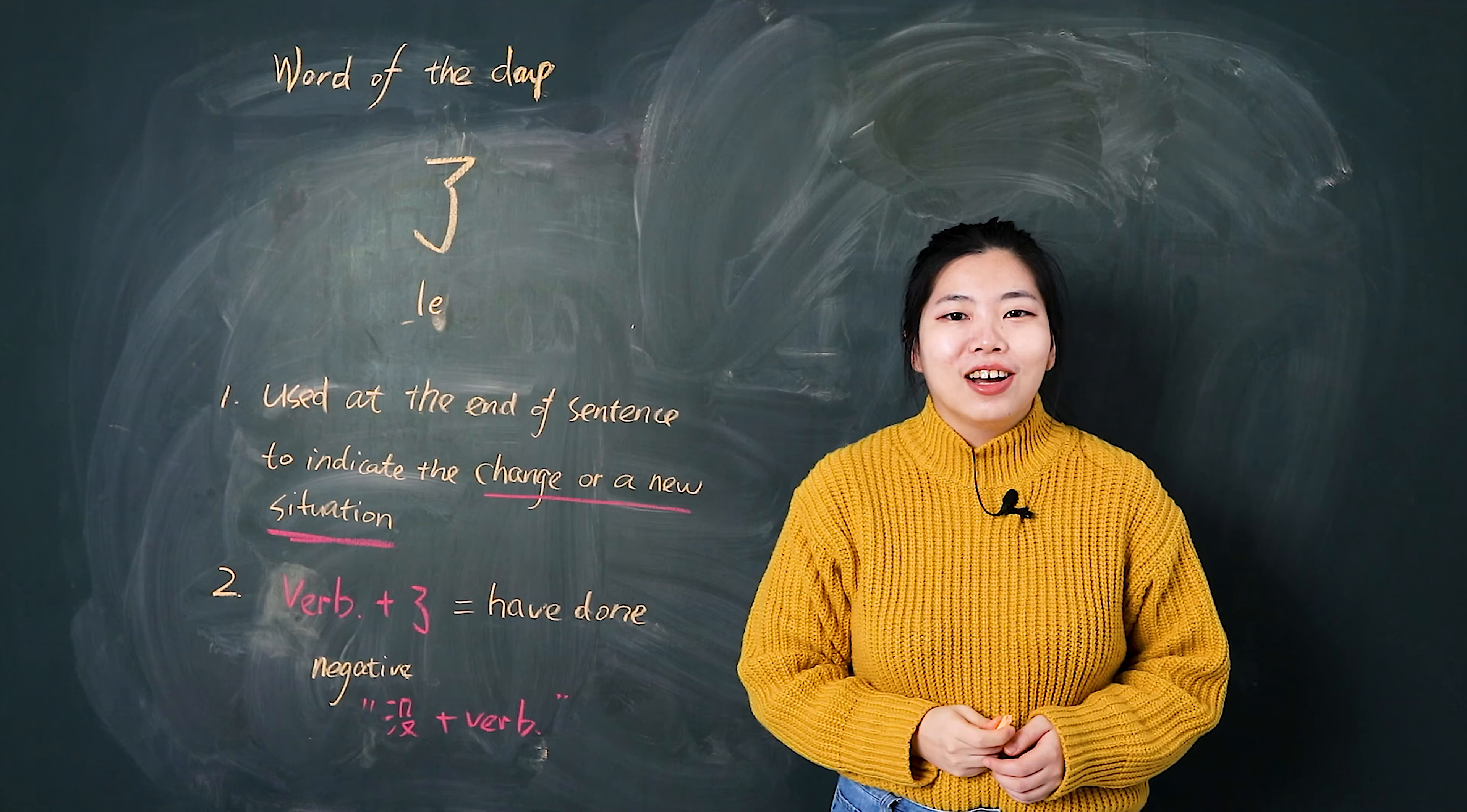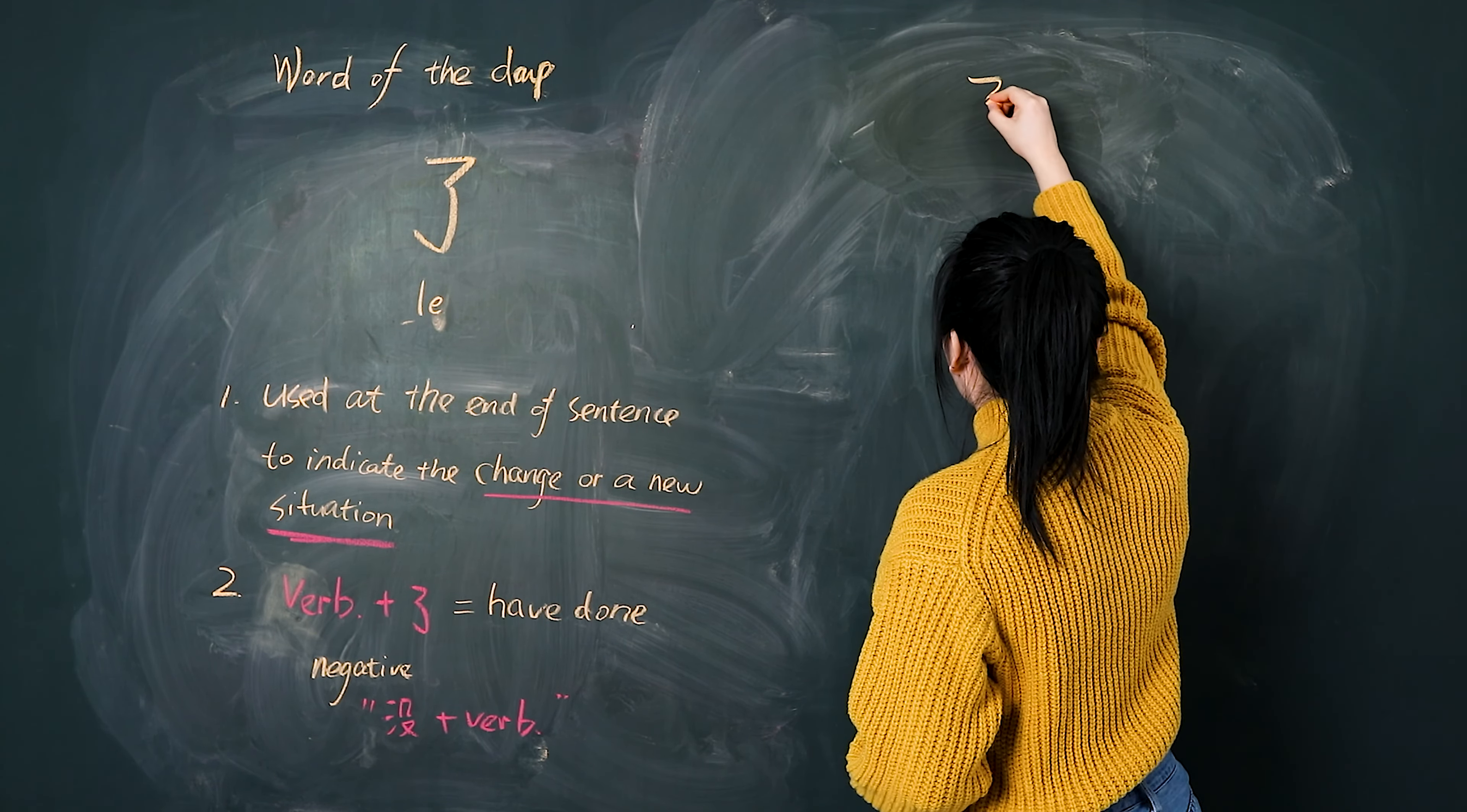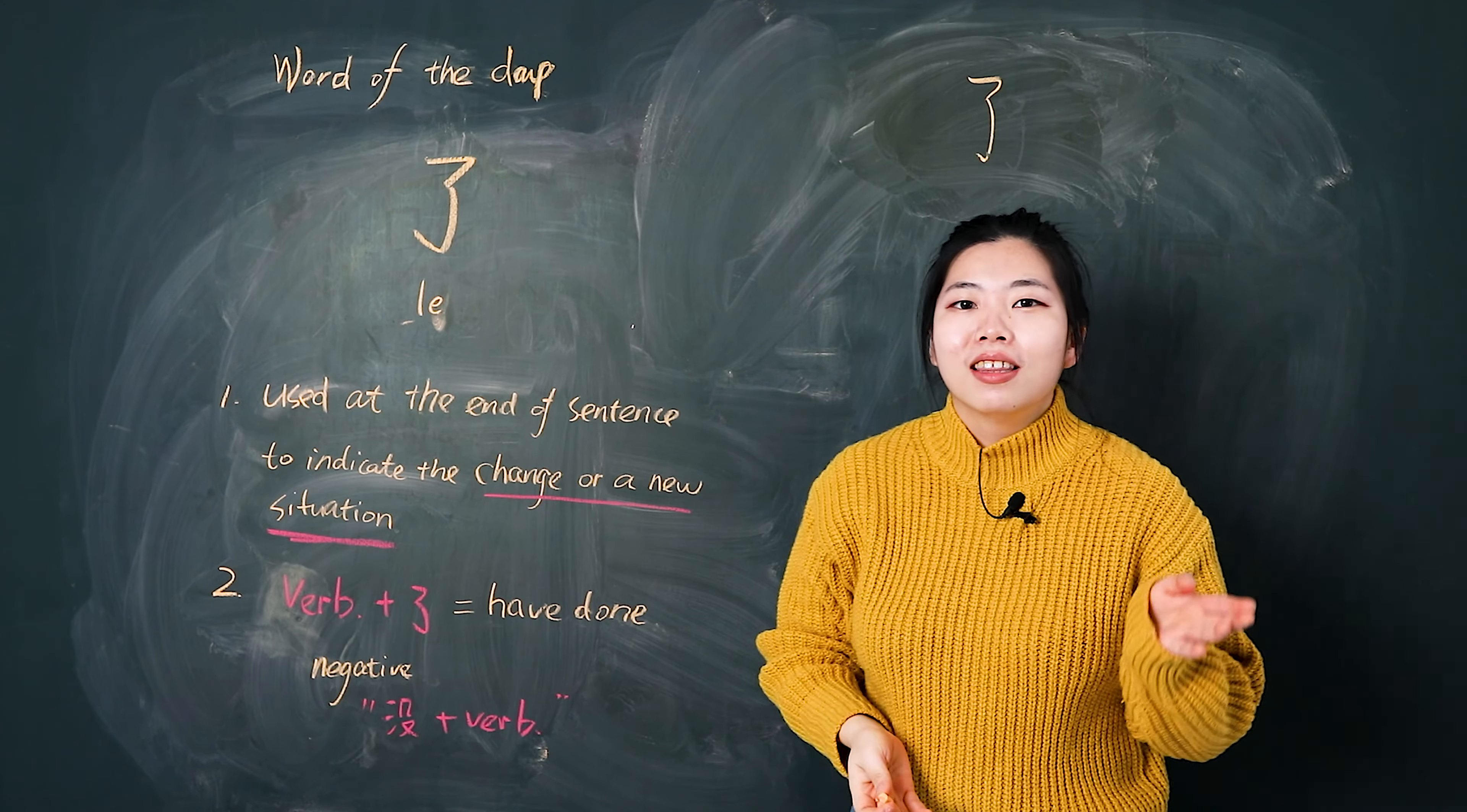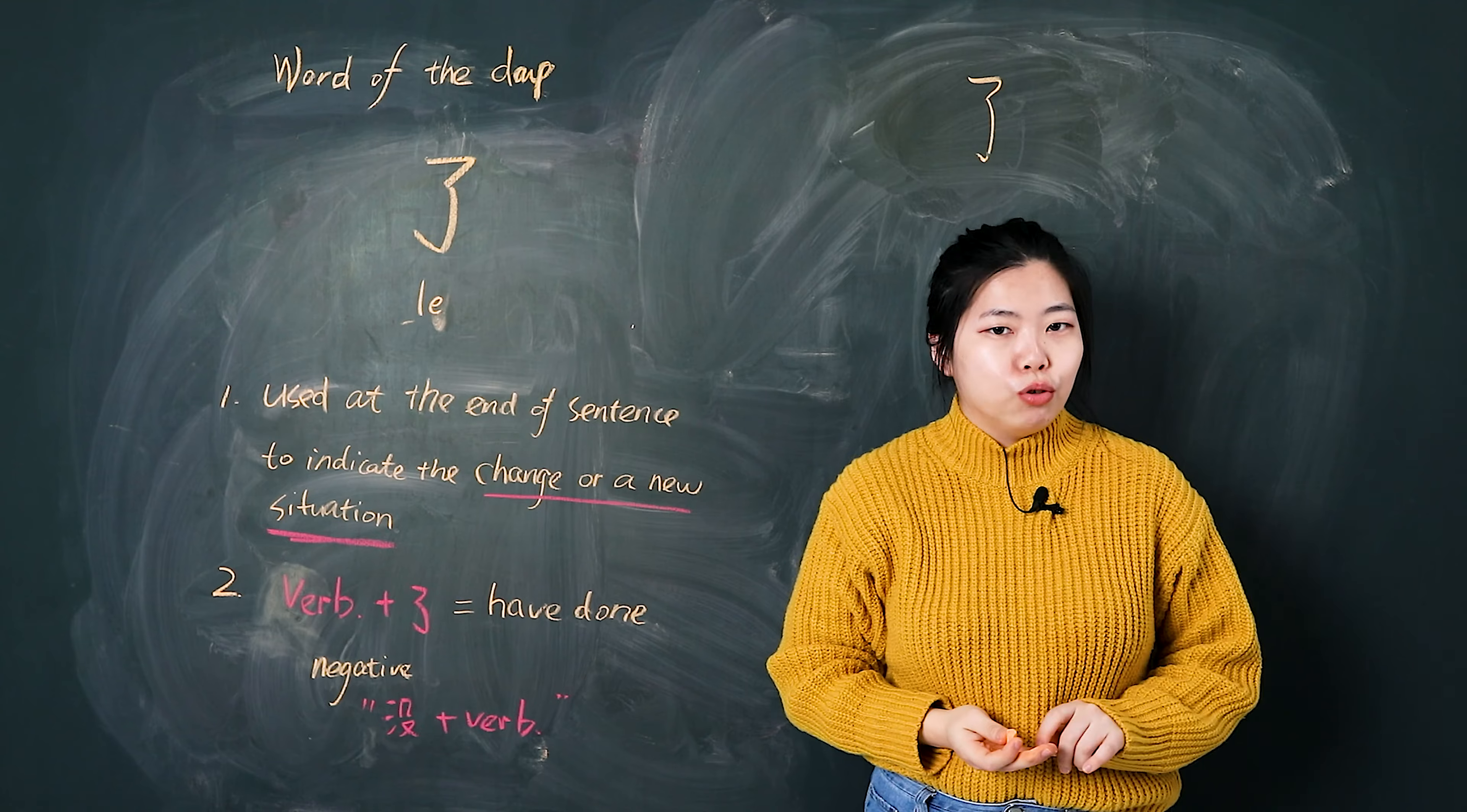Now, let's write it together. 我们一起写. 很撇, 树勾. 了, 了. It's very easy to write, but it's quite hard to know how to use it.